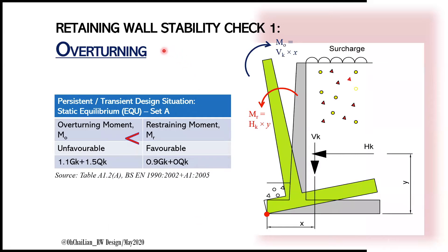There are three important checks for the stability of a retaining wall. First, it is necessary to check for overturning about its toe. The overturning moment caused by the horizontal force shall be less than the restraining moment contributed by the vertical force. The factors suggested by Eurocode under persistent and transient design situation static equilibrium are 1.1 for Gk and 1.5 for Qk for unfavorable overturning moment, whereas favorable restraining moment factors are 0.9 for Gk and 0 for Qk.